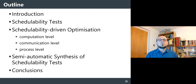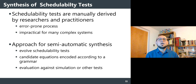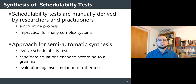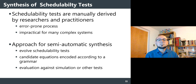In all the optimization activities covered, we always had or created a schedulability test. Those tests were mostly manually derived by researchers and practitioners, which is an error-prone process — the literature contains schedulability tests that were later found to be wrong. For very complex systems this is impractical, and we cannot always be sure the test is correct. So we pursued an approach to semi-automatic synthesis of schedulability tests, using a search heuristic guided by a fitness function to evolve good schedulability tests.